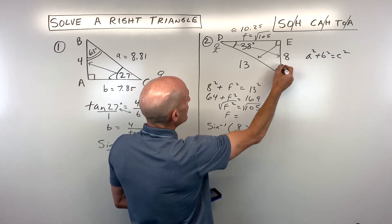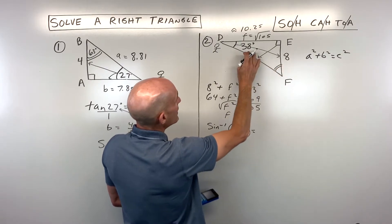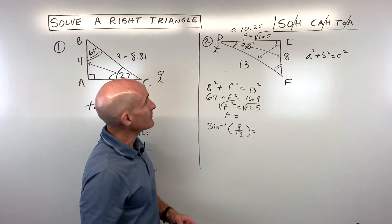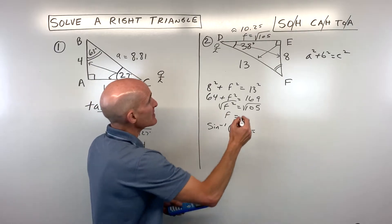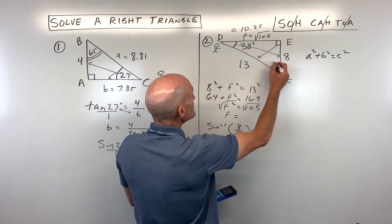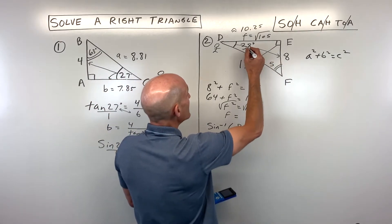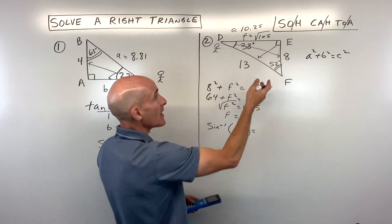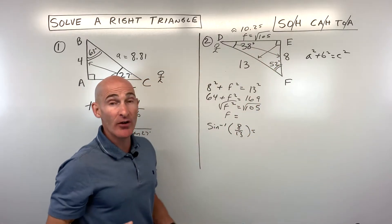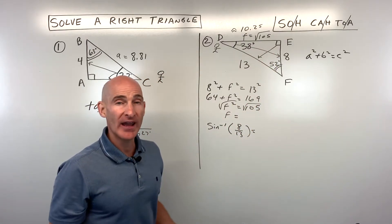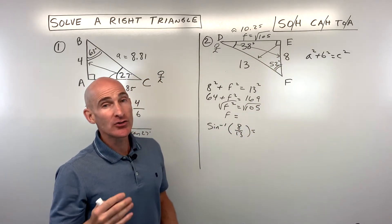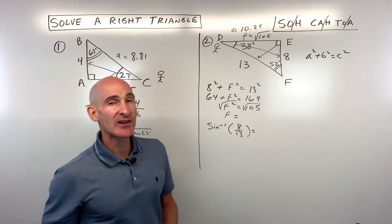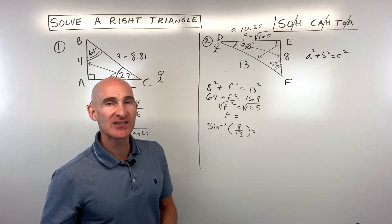To find angle F, we know the two acute angles must add up to 90 degrees. So angle F equals 90 minus 38, which is 52 degrees. You've solved the triangle — all sides and angles found. Let's go through two more examples for extra practice.